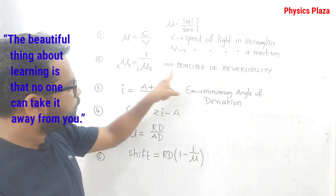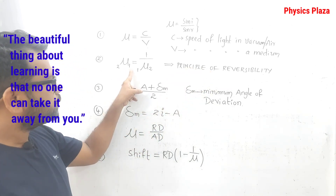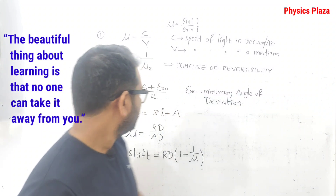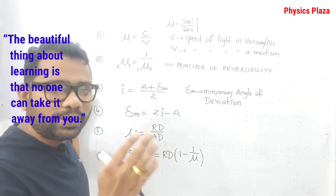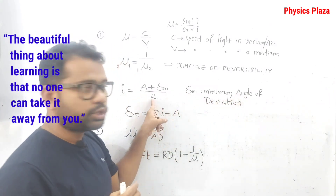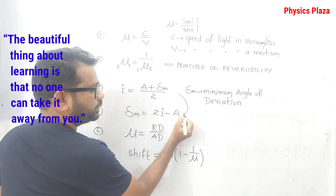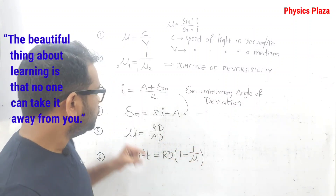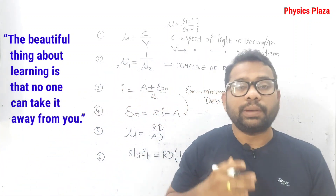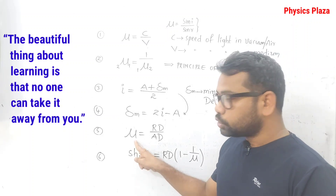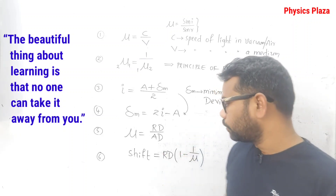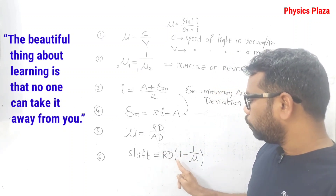The second formula is based on the principle of reversibility: refractive index of the first medium with respect to the second medium is equal to the reciprocal of refractive index of the second medium with respect to the first. The third formula is based on a prism: angle of incidence i equals angle of the prism plus minimum angle of deviation, all divided by 2. This can be rearranged depending on what the data asks us to calculate.